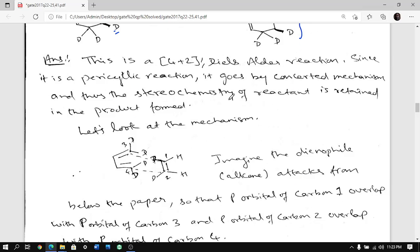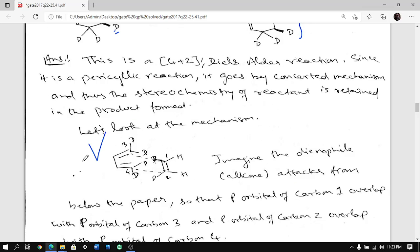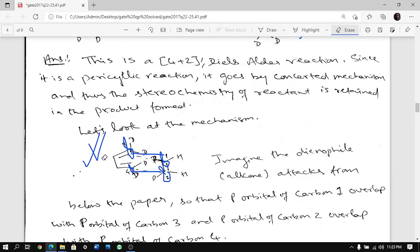So first thing is Diels-Alder reaction, it's a concerted reaction, it happens in one step. It does not happen in two steps, so there is no chance of rotation. So the stereochemistry of reactant will be retained in the product. There is a p orbital here and a p orbital here that will overlap with the p orbital on this one. So they both overlap and that's how the bond is formed.